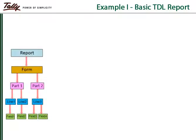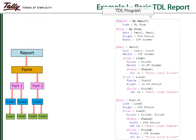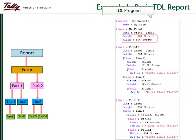If the report consists of a number of parts, lines, and fields, the TDL program will be somewhat like this. We can always specify the dimensions for any interface element by making use of dimensional attributes.